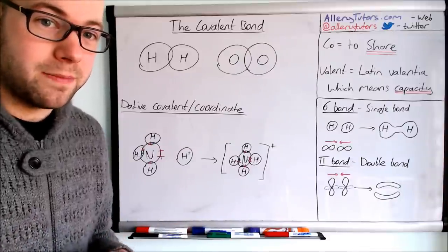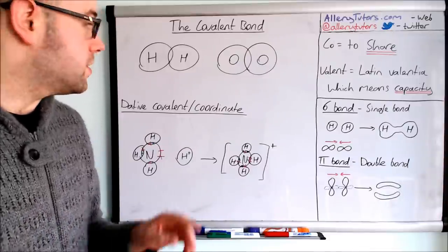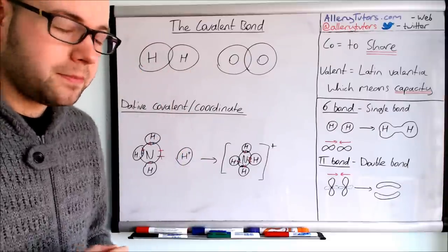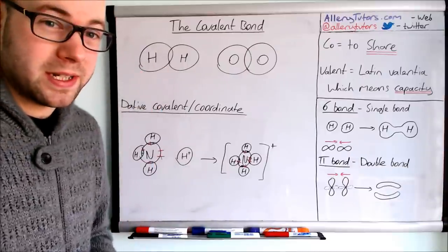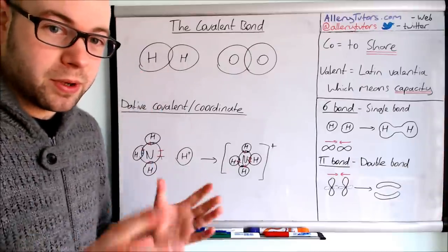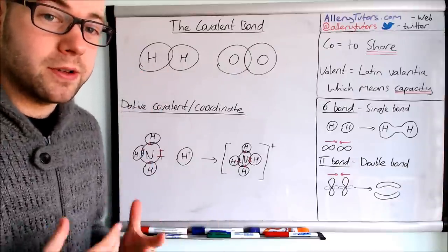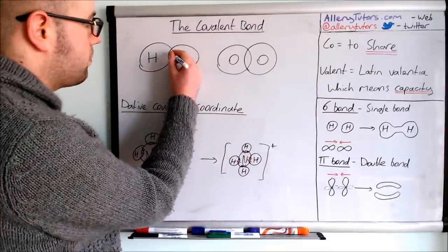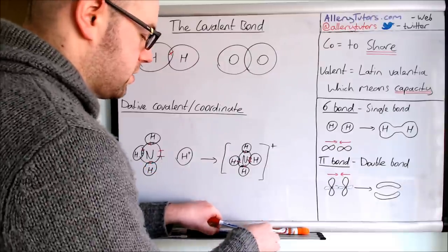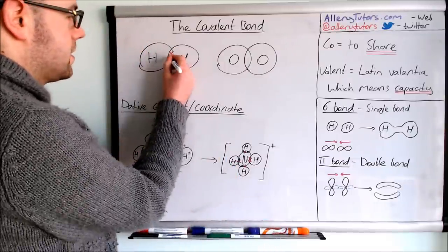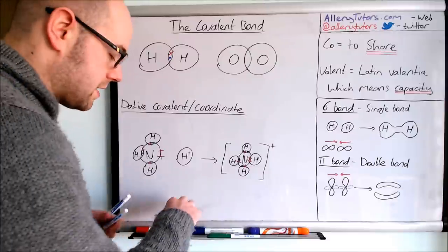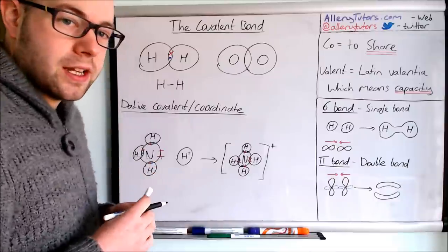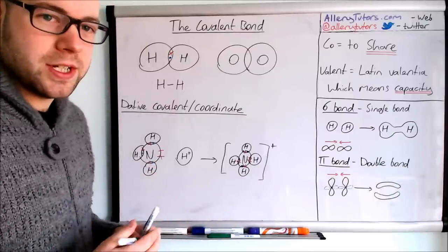We've got a hydrogen atom here, with the outer shells of electrons overlapping. The basic principle is they share electrons so both have two electrons in the outer shell to become stable. One hydrogen has one electron and the other shares its one, and when we draw the molecule we use a solid line to represent the covalent bond — something you would have done at GCSE.